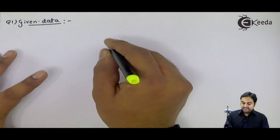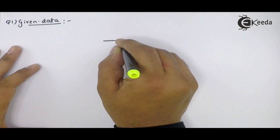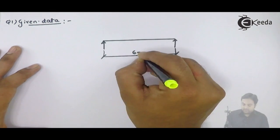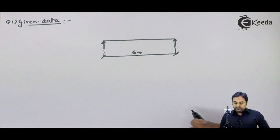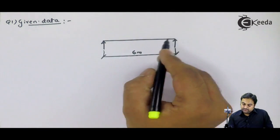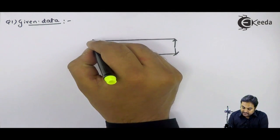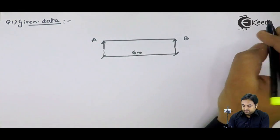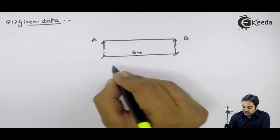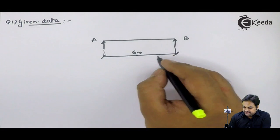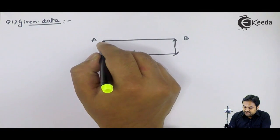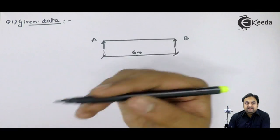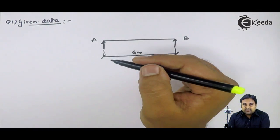If I draw the diagram: here I have a beam — this is called a simply supported beam. At point A and at point B, the beam is supported, and its span or length is 6 meters. It is supported at its extreme ends, which is why it is called a simply supported beam.